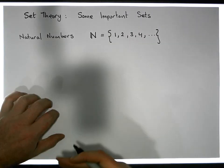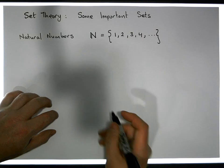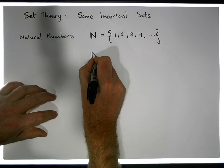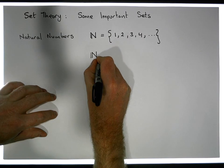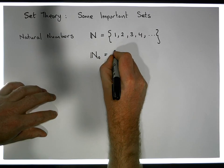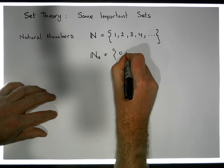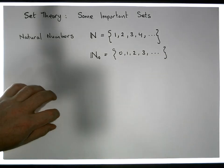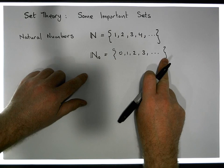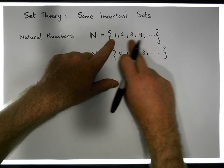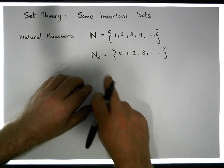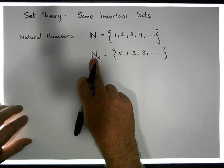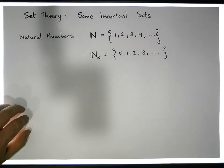If we want to include zero in the set, we define the set N subscript zero to be equal to the set containing the values zero, one, two, three, and so on. So the notation N₀ represents the natural numbers inclusive of zero.